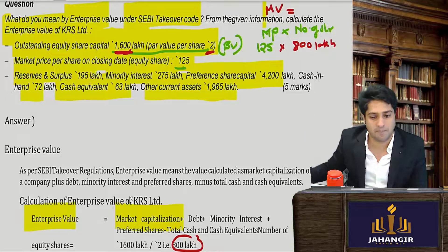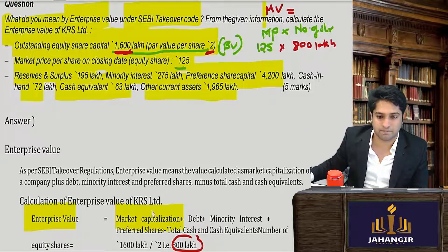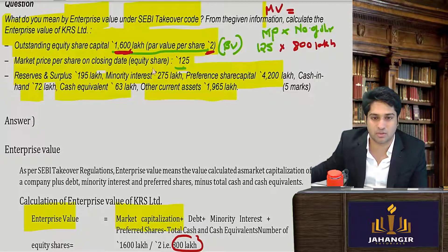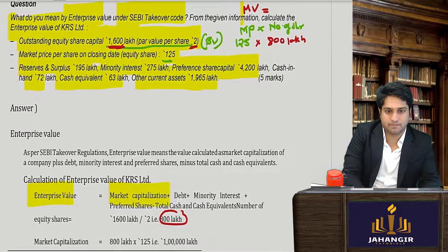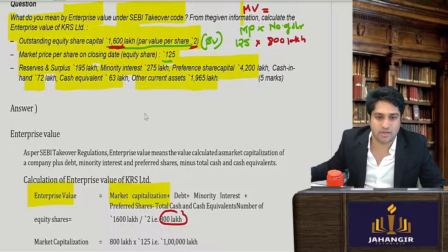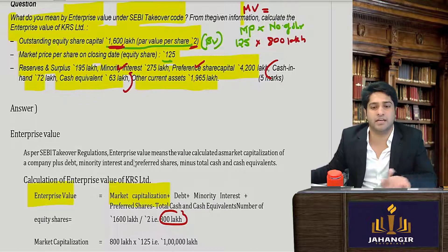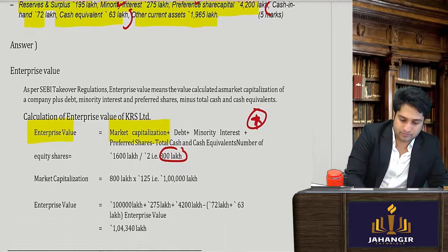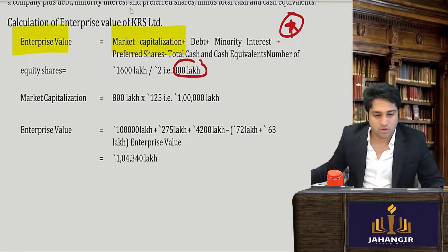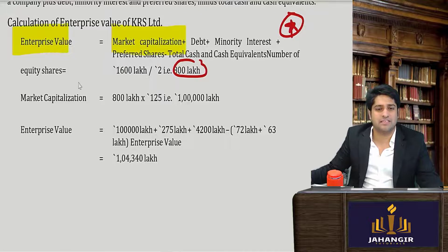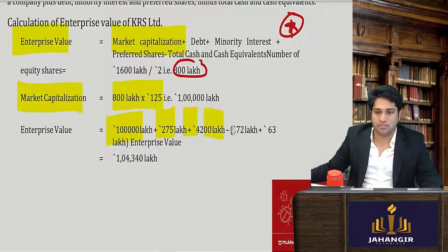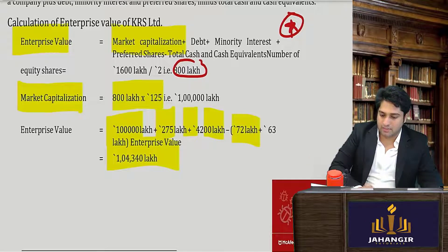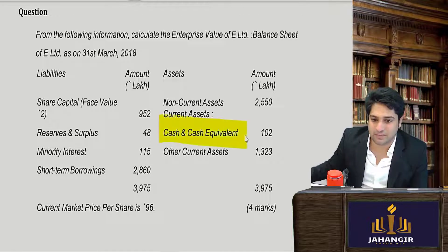Then I require the debt amount — what is the debt I'll have to pay, including debentures and creditors. In this case there is no debt — zero debt. Then minority shareholders are present, preference shares are also given, and cash and cash equivalents will be subtracted. No other adjustment is needed. The formula is: market capitalization of 800 lakhs into 125, plus minority interest and preference shares, minus cash and cash equivalents, gives the enterprise value.